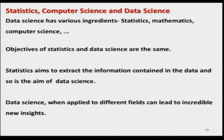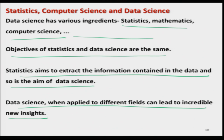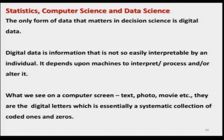Data science has various ingredients: statistics, mathematics, computer science, and different types of sciences. But the objectives of statistics and data science are the same — to extract the information contained in the data. This data science when applied to different fields can lead to incredible new insights. The only form of data that matters in decision sciences is digital data, so that whenever we want to use any statistical tool, we use software and the data is available in a format directly applicable to the software.